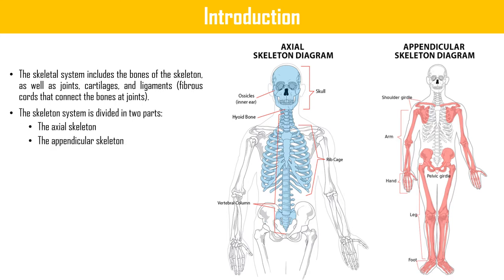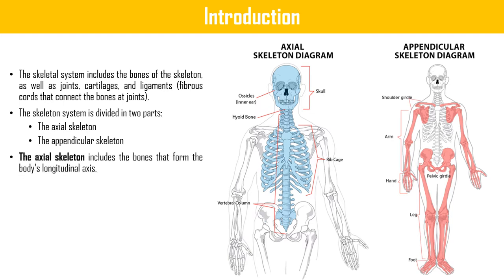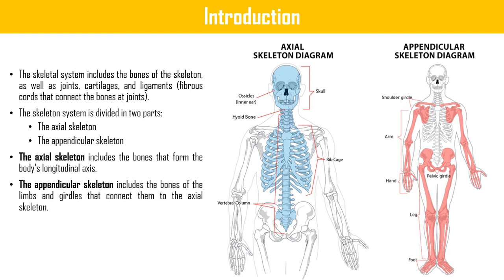The skeletal system is divided into two parts: axial skeleton and appendicular skeleton. The axial skeleton consists of the skull, ribcage, and vertebral column, whereas the appendicular skeleton consists of the shoulder girdle, arms, hands, pelvic girdle, legs, and feet. The axial skeleton includes bones that form the body's longitudinal axis.